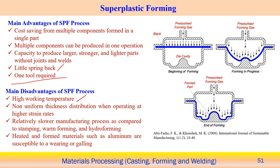Disadvantages of superplastic forming include the requirement of relatively high temperature — at least above 50% of the melting point. Non-uniform thickness distribution can occur when operating at high strain rates, making it difficult to maintain uniform thickness through the thickness direction. It is a diffusion-controlled and therefore very slow process compared to stamping, warm forming, and hydroforming. Heated materials such as aluminium are susceptible to galling, which is a specific defect associated with this process due to high temperatures. Despite these limitations, this process is very suitable for producing very complex-shaped components.